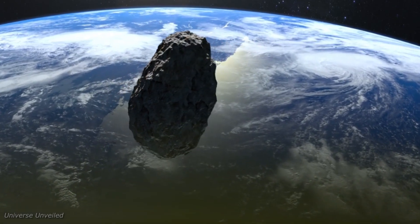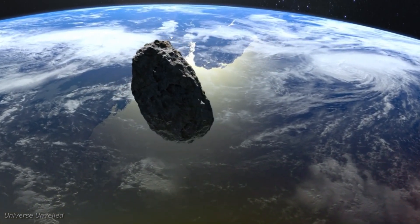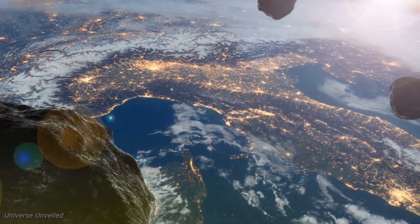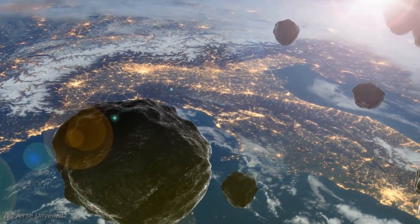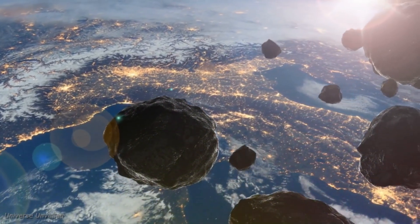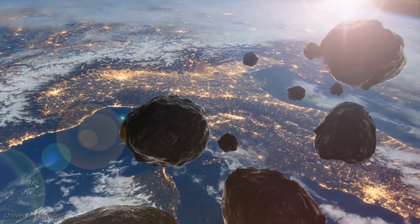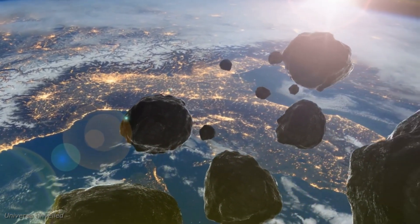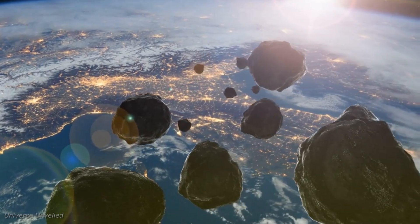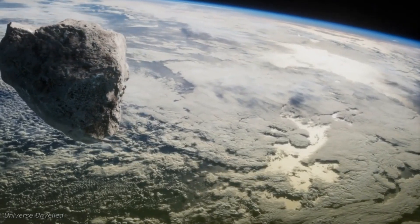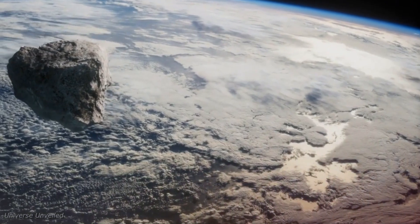Our story begins in 2004 with the discovery of an asteroid of such proportions that it could easily dwarf the Eiffel Tower. Its name, Apophis, was not chosen lightly, for it carries the weight of ancient Egyptian mythology, named after the god of chaos, destruction and darkness.